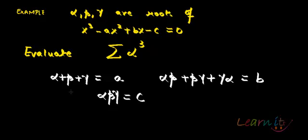Okay, again an interesting example. We have roots of a cubic equation alpha, beta, gamma. We have a cubic equation x³ - ax² + bx - c = 0.